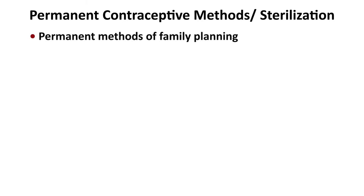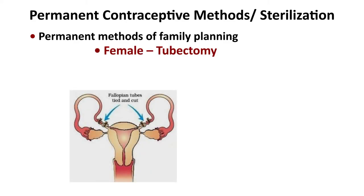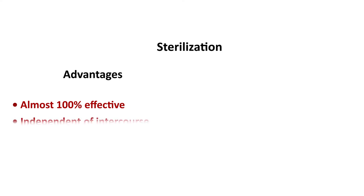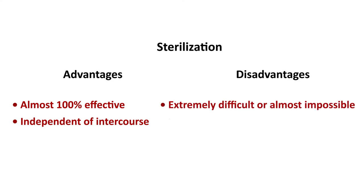Permanent contraceptive methods or sterilization: for females, tubectomy; for males, vasectomy. Advantages of sterilization include that it is almost 100% effective and independent of intercourse. Disadvantages include that it is extremely difficult to near-impossible to reverse, and surgical intervention is necessary.